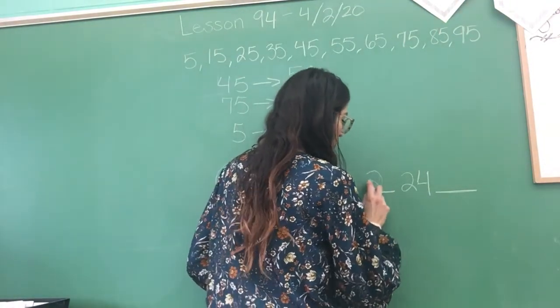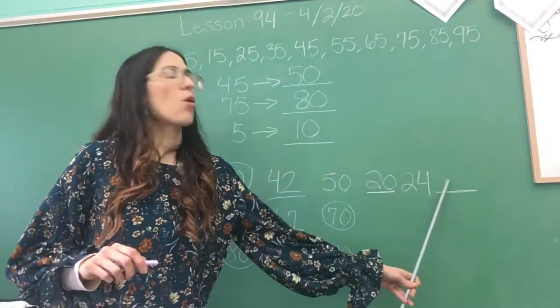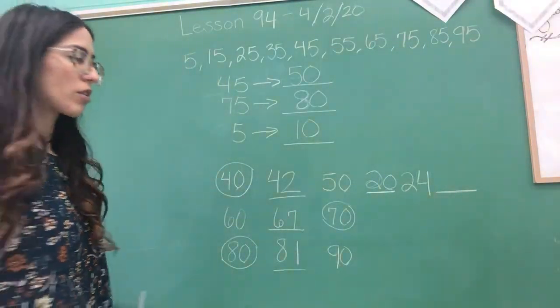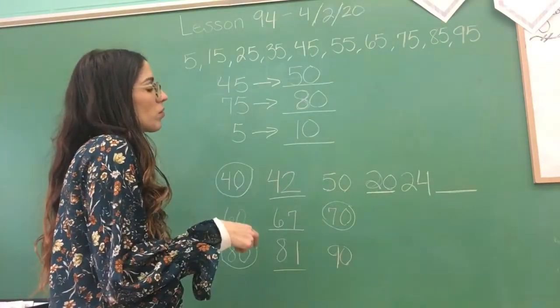So we're going to put what? 20. Very good. 20 or what else can we round it to? So you're either going to be closest to 20 or closest to what's the other one?